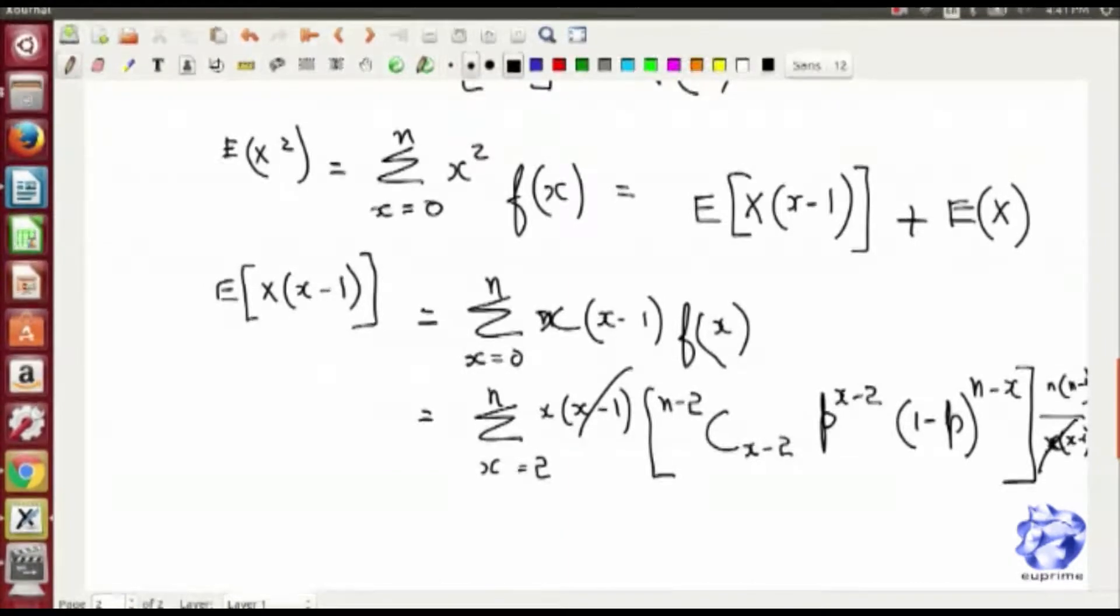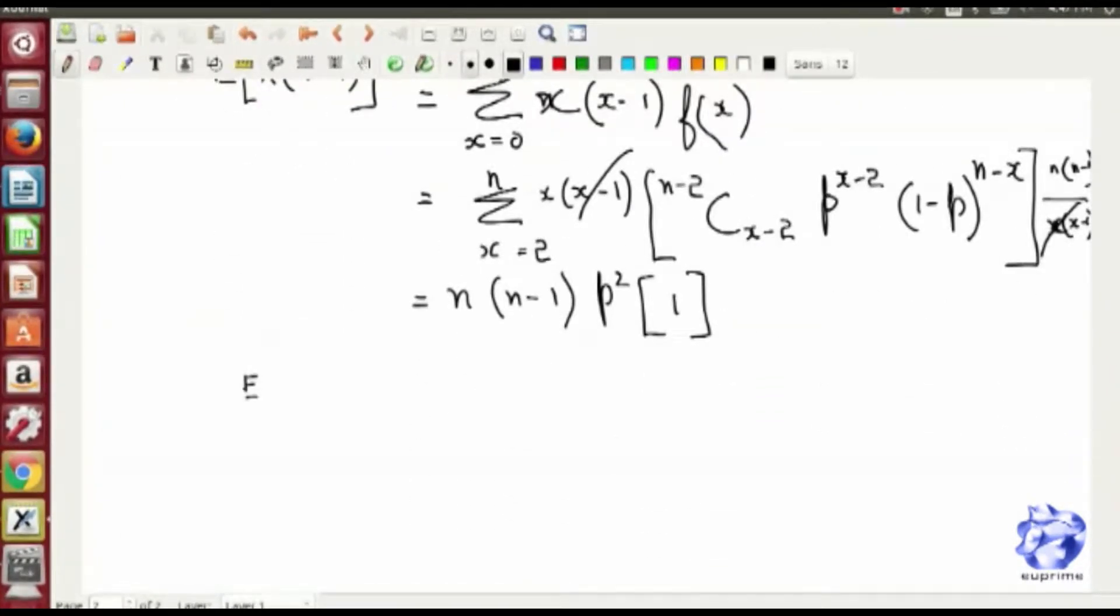So we compute from x equals 2, because x equals 0 and x equals 1 both evaluate out to be 0.